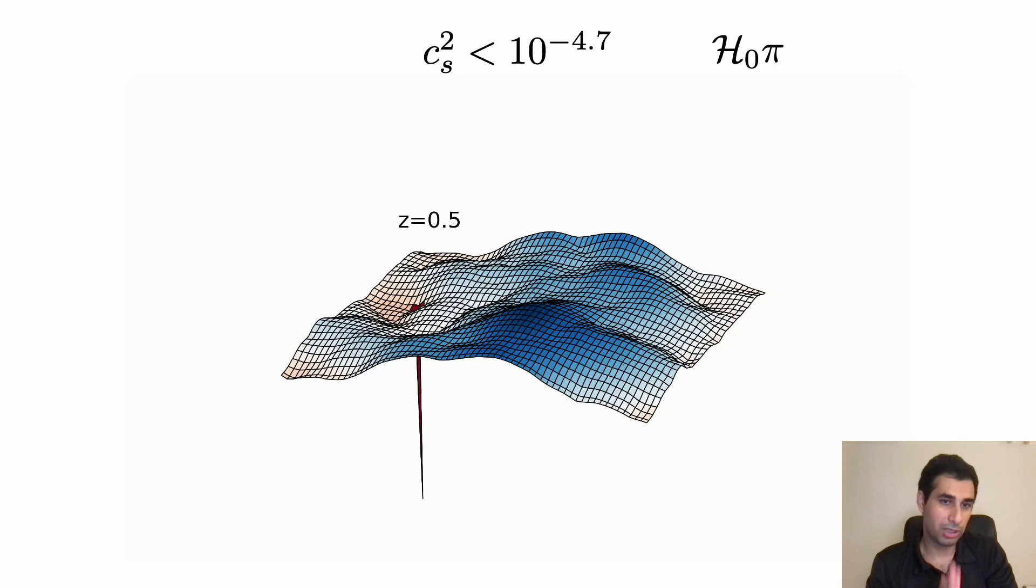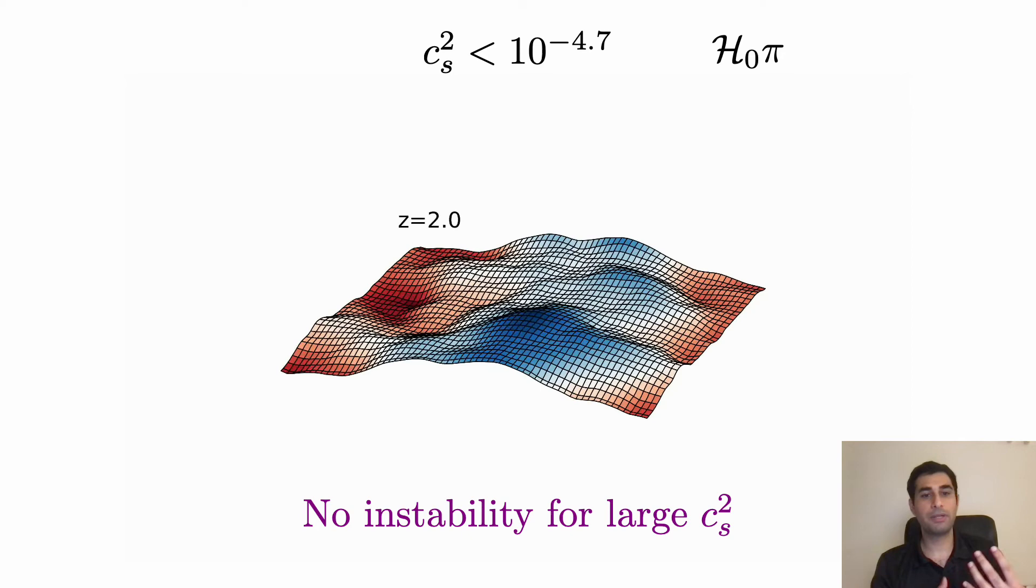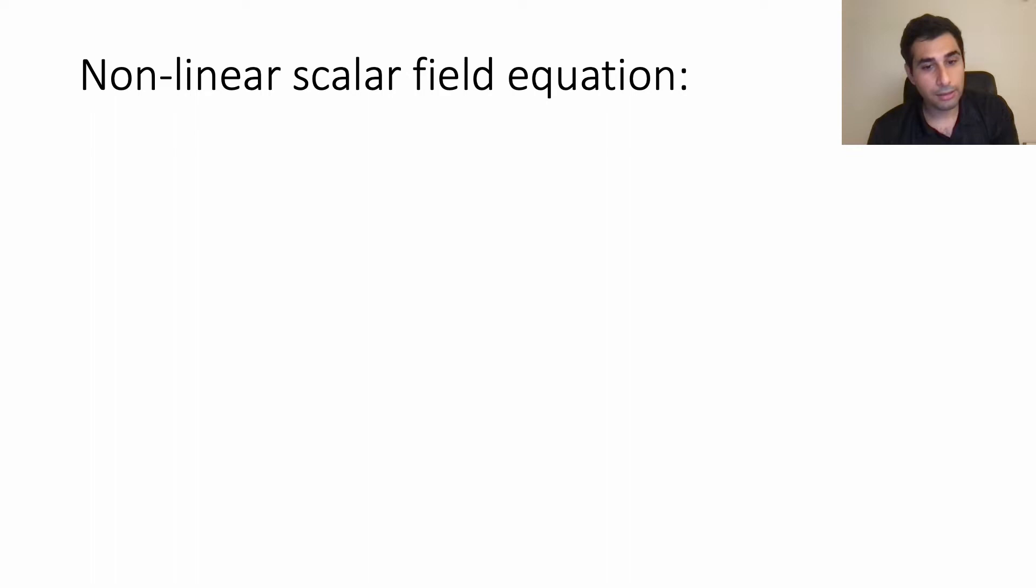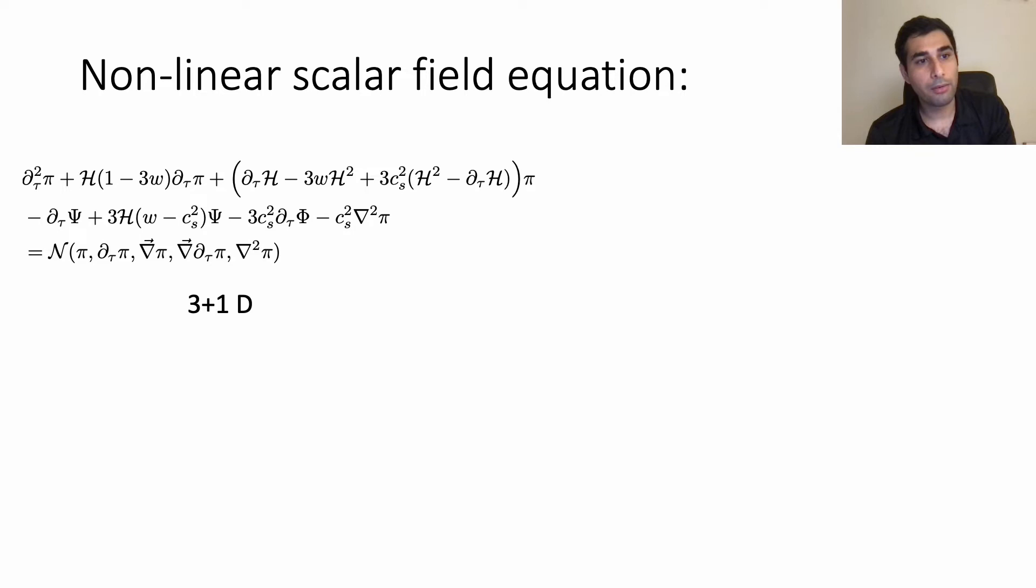And what we know is that for larger speed of sound squared there is no instability. I mean this is what we know from cosmological simulations. And in order to understand what's going on precisely we have to study this equation analytically. And to do so from this complicated non-linear partial differential equation we only consider two terms, two most important terms, and also a spherical symmetry.